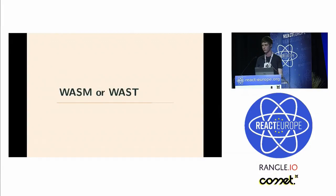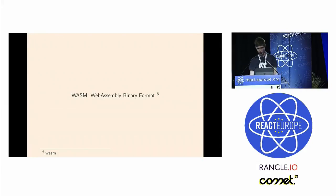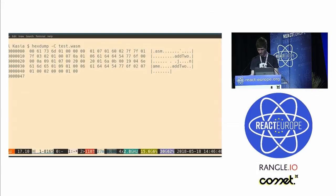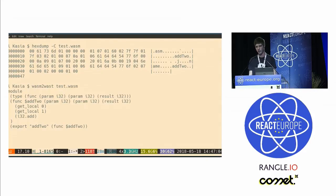I'm going to talk about the formats — the representations of WebAssembly — because you have two major representations and some people are confused about that. First, you have WASM, which is the binary format — it's the one meant to be distributed. It's basically just a sequence of bytes, nothing really interesting there. What is more interesting is the WebAssembly text format, which is meant to be readable for humans and the debugger as well. You can disassemble a binary and get this list-like syntax, which is the representation of the binary in text.